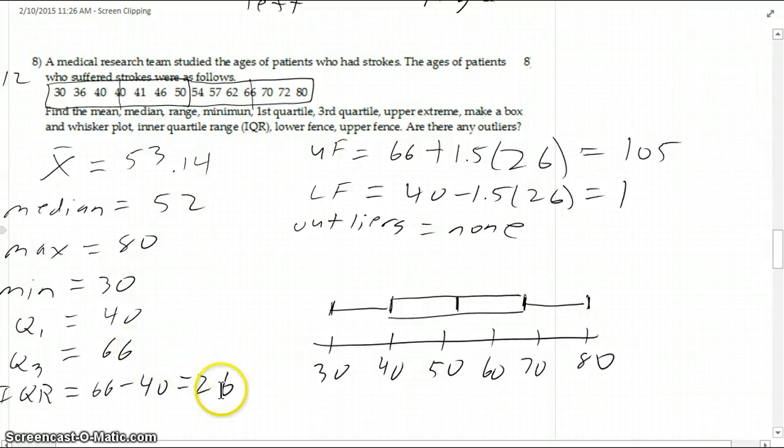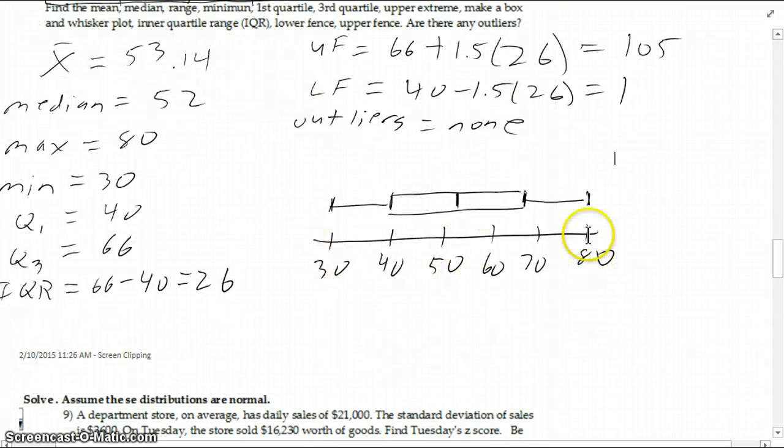Interquartile range is 26. Upper fence is quartile three plus one-and-a-half IQRs, or interquartile ranges. So it gives us 105. And the lower fence is quartile one minus that same number, which gives us one. There are no outliers, because everything's in between there. And here's what the box and whisker plot looks like. And make sure you have a scale here, so it's not just floating out there in space. You need to have this kind of standard ruler that you're measuring it against.